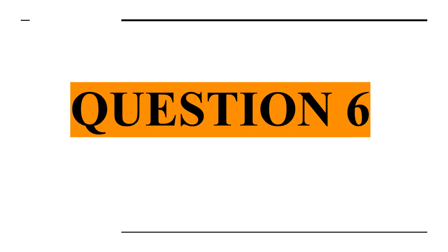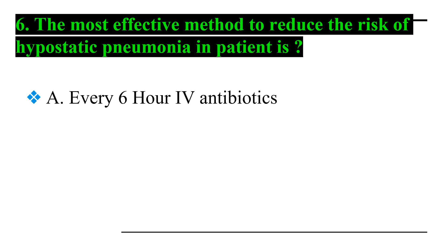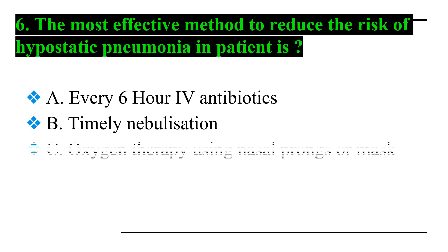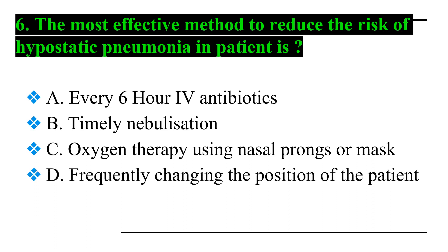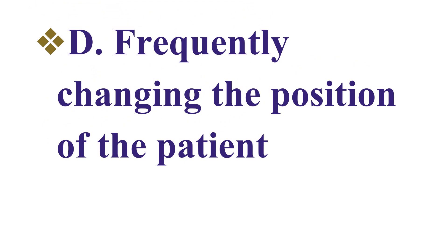Question number six: the most effective method to reduce the risk of hypostatic pneumonia in a patient is — Option A: every six-hour IV antibiotics, Option B: timely nebulization, Option C: oxygen therapy using nasal prongs or mask, and Option D: frequently changing the position of the patient. Answer number six: Option D — frequently changing the position of the patient.